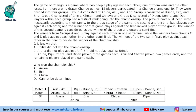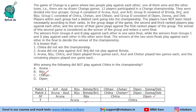Who won the championship? Aruna wins the championship. Who did not play against Chitra? Chitra played against Chetan in match 2, Deepin in the semi-final, and Aruna in the final. So Chitra did not play against Biju. That is the solution to the set and answers to all the questions.